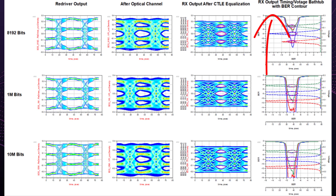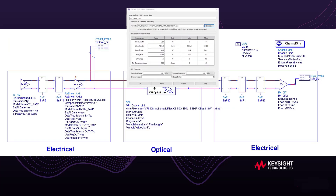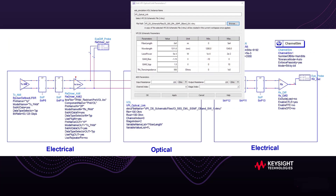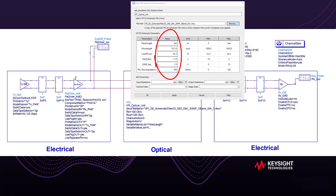Finally, you can also observe the performance variations due to the changes in fiber length and laser power as shown here. Additionally, you can see height and width at bit error rate 1E-6 as well as VSR PAM-4 measurements.